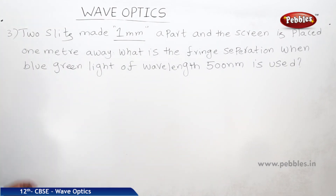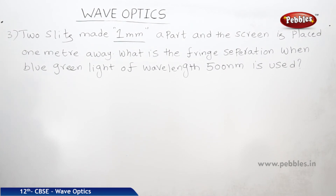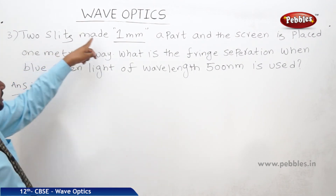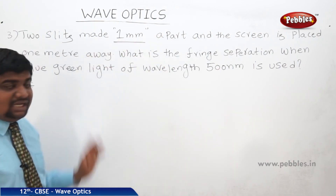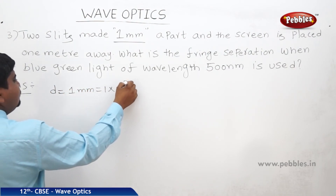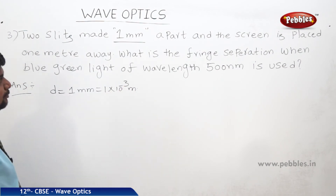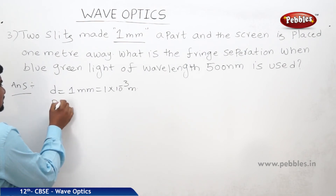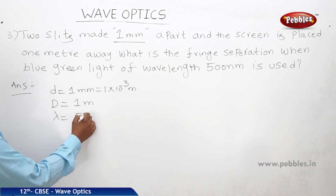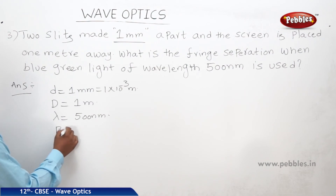Now we will solve a problem relating to fringe width. Two slits are made 1 millimeter apart and the screen is placed 1 meter away. What is the fringe separation when blue-green light of wavelength 500 nanometers is used? The distance between the two slits is small d equals 1 millimeter, and capital D equals 1 meter. Fringe separation is beta.